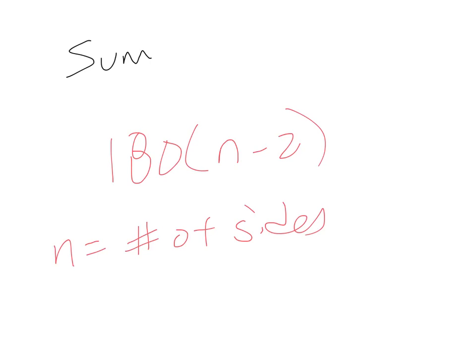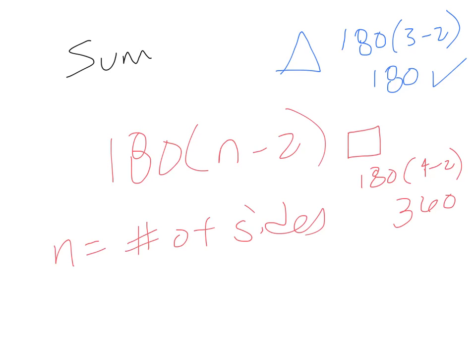If you think about that for a second, for a triangle, you would do 180 times 3 minus 2, which is just 180. For a square, you would do 180 times 4 minus 2, which would give us 360.